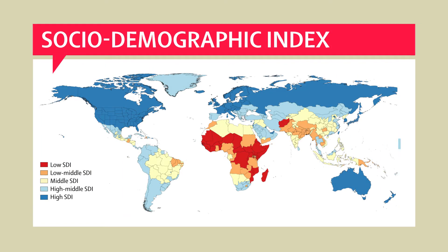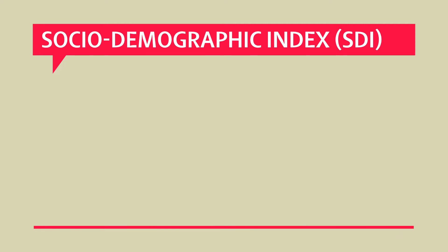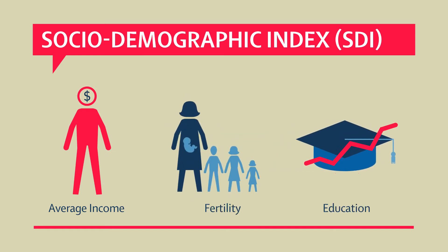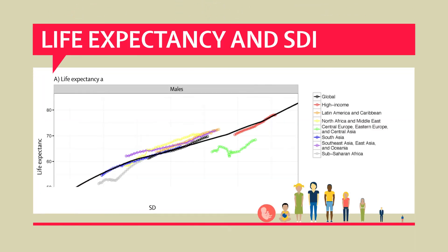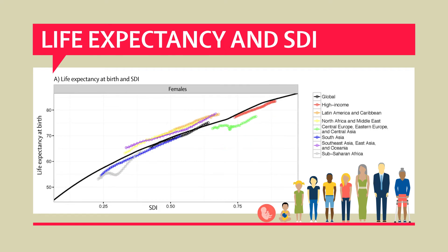New results from the 2015 Global Burden of Disease study categorize regions according to the Sociodemographic Index, or SDI — a new index combining three predictive indicators of health outcomes: average income, education, and fertility rates. This study examines SDI and life expectancy, both of which increased from 1980 to 2015 for every region.